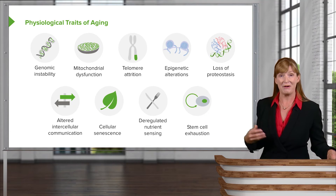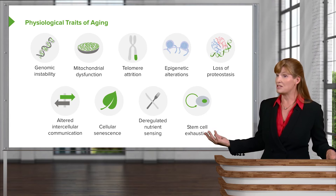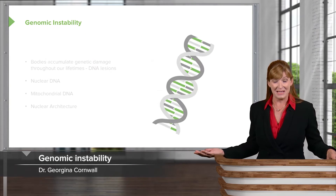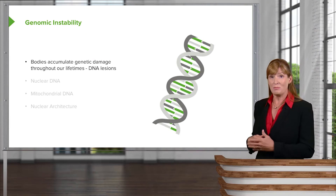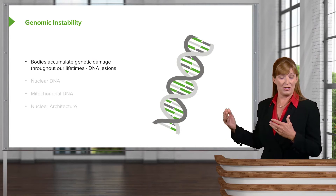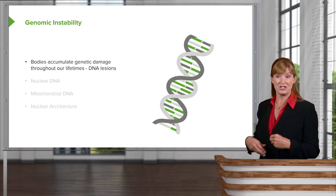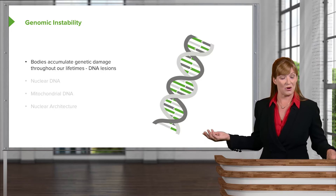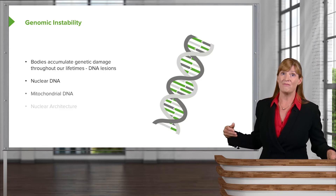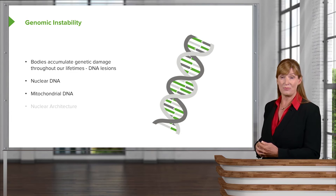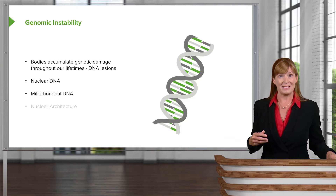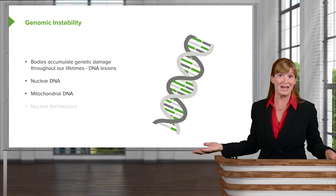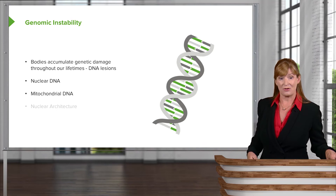We will move through these categories fairly rapidly as I summarize some of the things you already know quite a lot of details about. When we consider genomic instability, we are going to consider that we accumulate genetic damage throughout our lifetimes — in the form of DNA lesions, through mutations, through environmental interactions. We have both nuclear DNA and mitochondrial DNA to consider in this realm of accumulating genomic damage and thus instability of genes, and perhaps interruptions or changes in how genes are transcribed and translated.